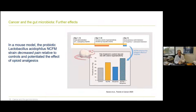In an interesting mouse model, the probiotic Lactobacillus acidophilus strain was shown to decrease pain relative to controls and to potentiate the effect of opiate analgesics. So your microbiota may even be able to modulate the effectiveness of painkillers in patients — particularly important also for cancer pain. There is a huge range of effects that microbiota and bacteria in the bowel can have.